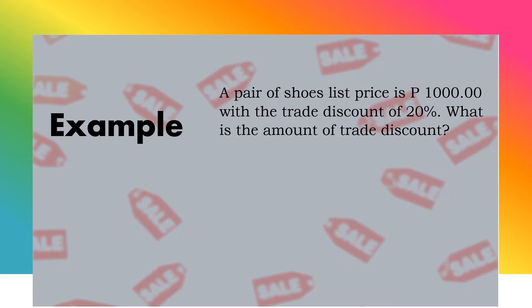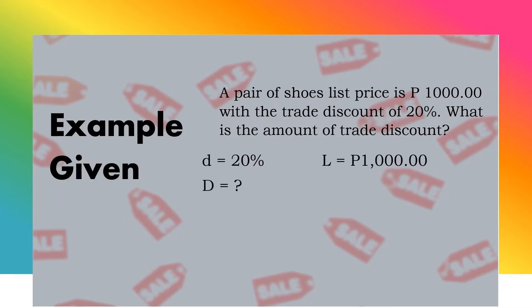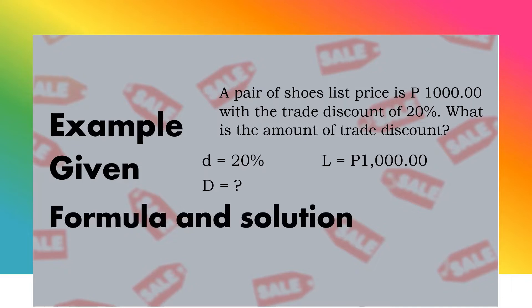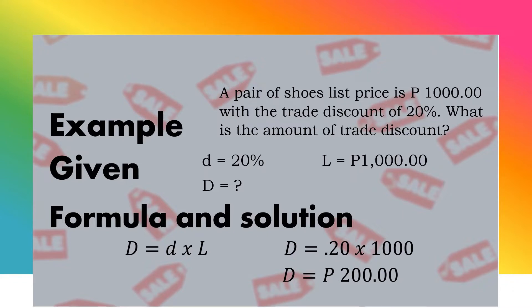Here is an example. A pair of shoes has a list price of 1,000 pesos with a trade discount rate of 20%. What is the amount of the trade discount? The given discount rate is 20% and the list price is 1,000 pesos. Using the formula, trade discount equals discount rate multiplied by list price: 20% times 1,000. The trade discount is 200 pesos.